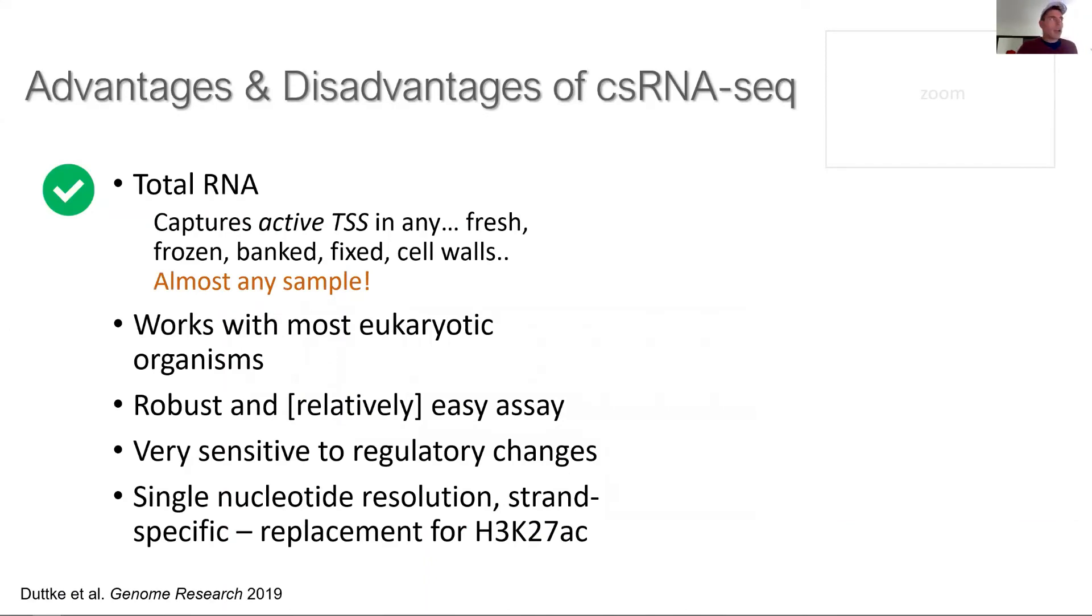Let's briefly talk about the advantages and disadvantages of CSRNAseq. Of course, no doubt the biggest advantage is that you can use total RNA. It's just a completely new paradigm to capture active transcription start sites in total RNA because it allows you to capture this from any fresh, frozen, bank fixed cell, tissue, whatsoever. Whether you have a pathogen inside a cell that might replicate in the cytosol, or you might have to fix your sample because they're BSL3 or 4—basically you name it, as long as it's eukaryotic, you can capture the small RNAs that are actively initiating.